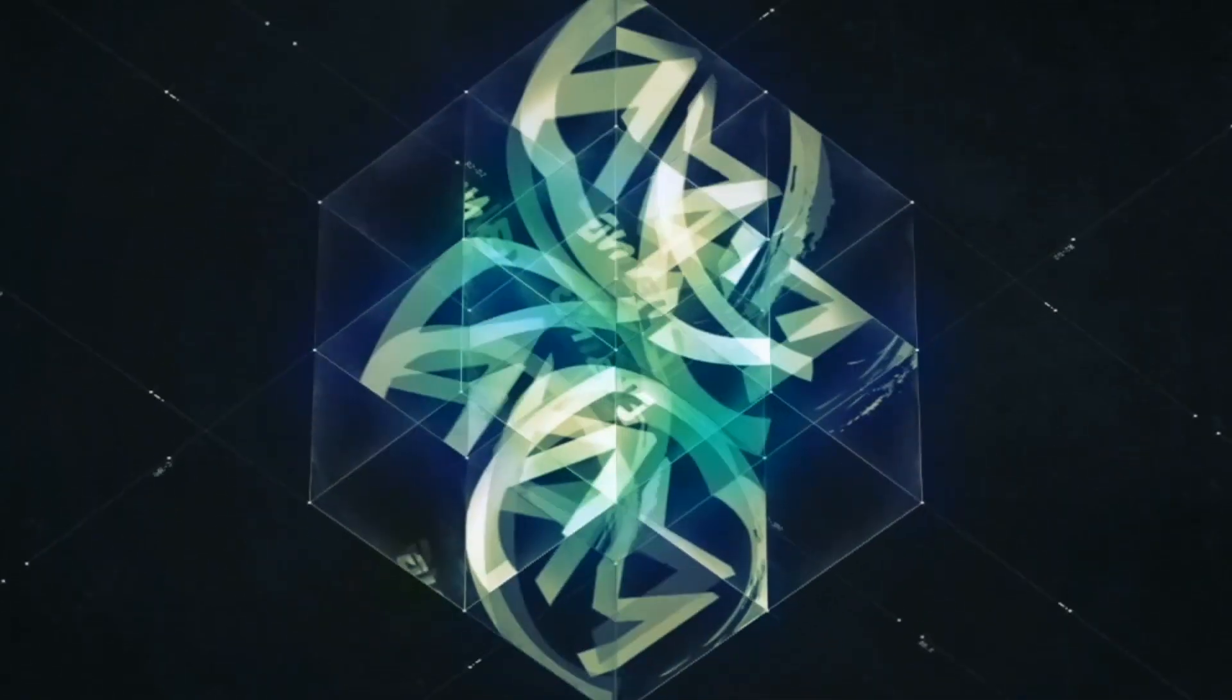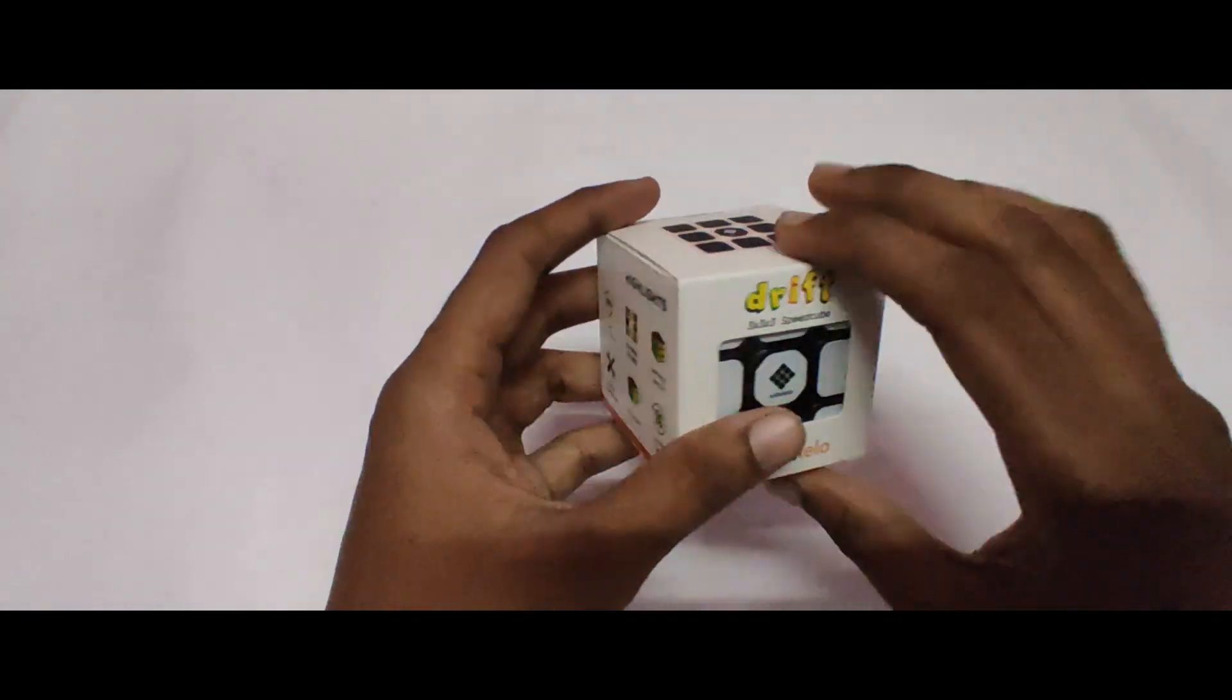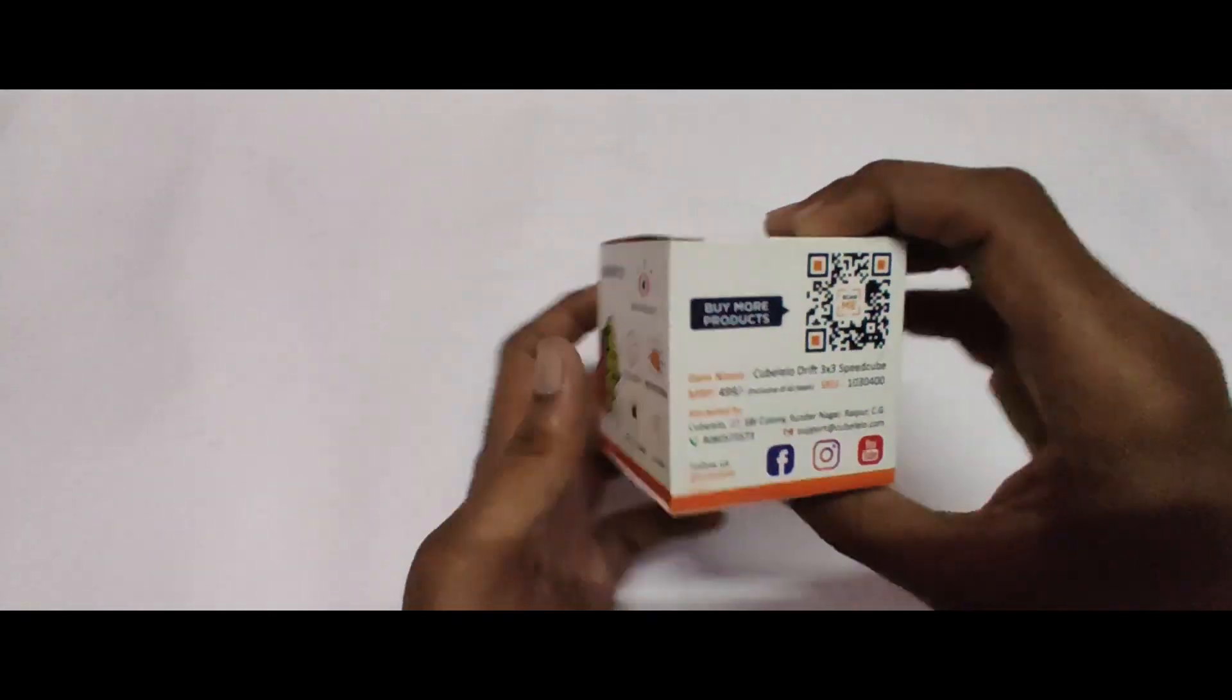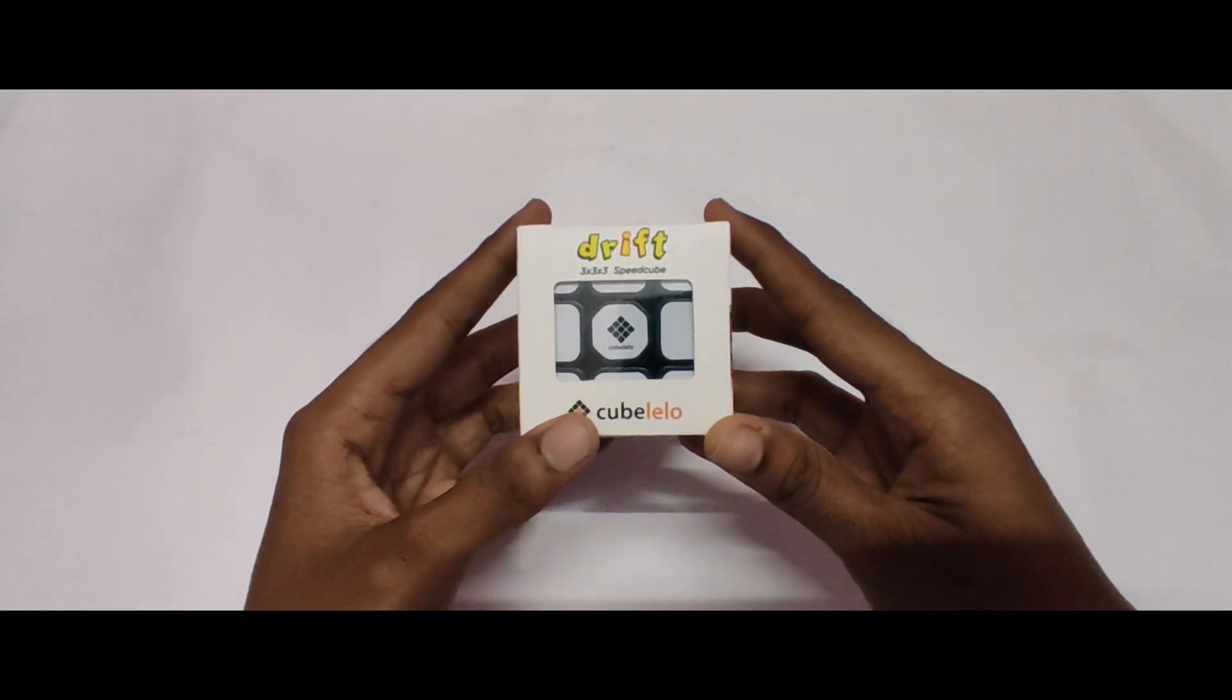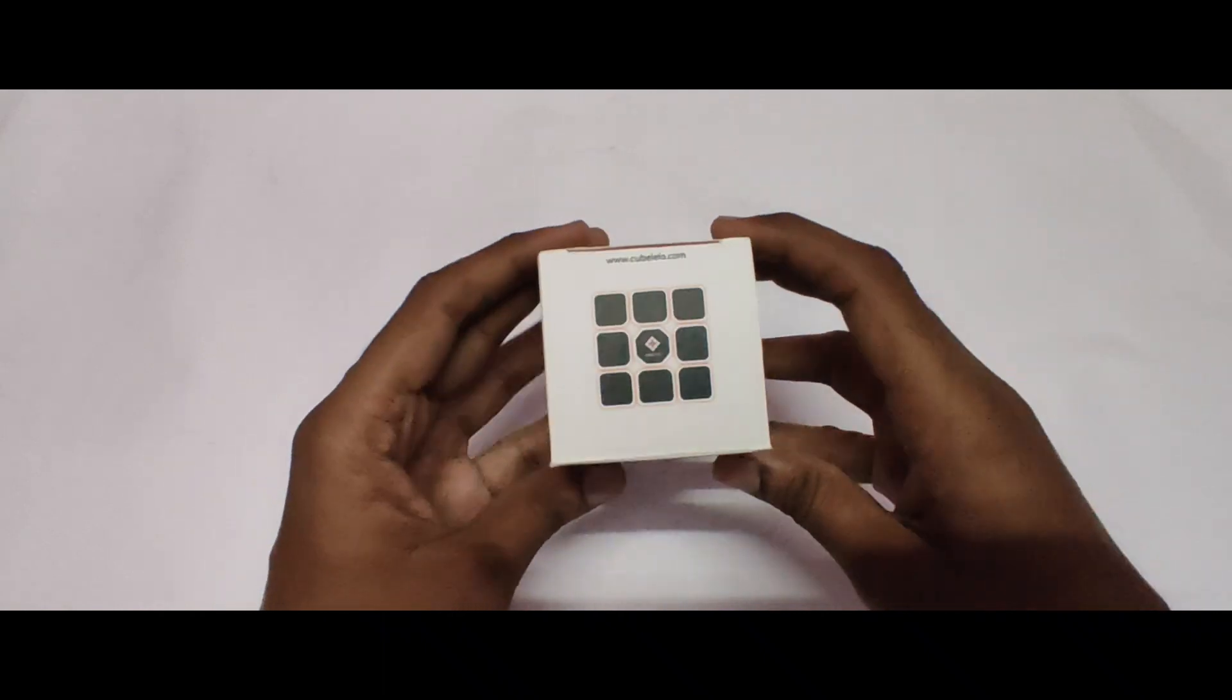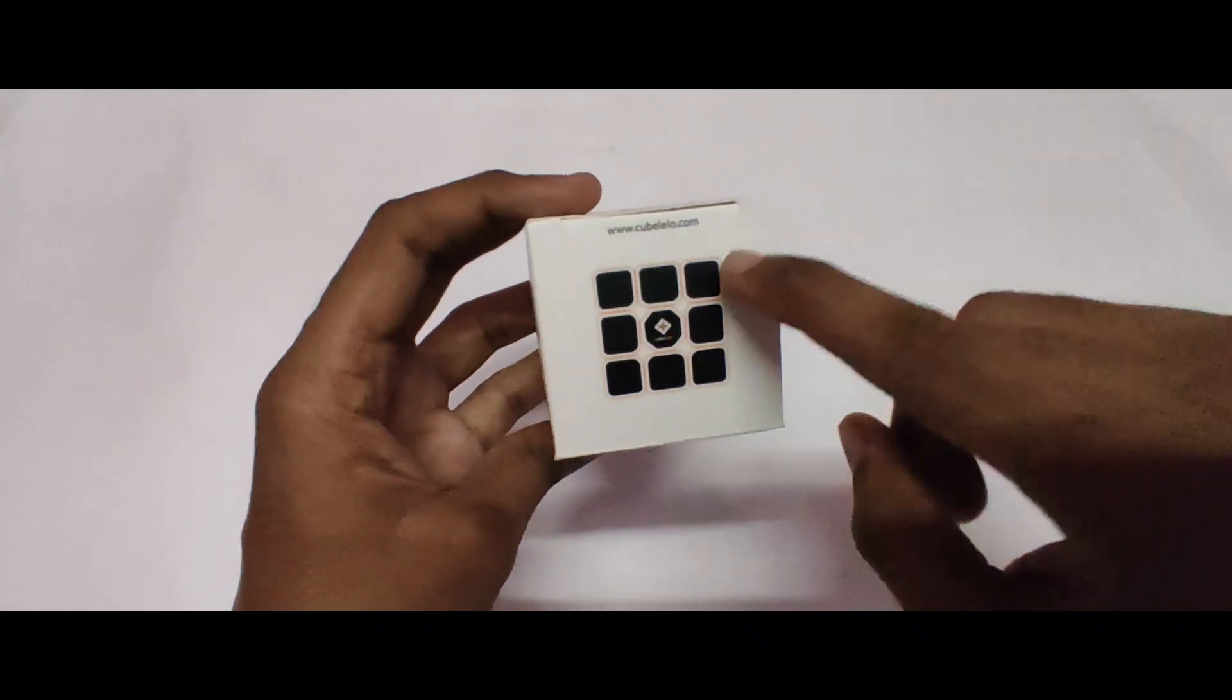Now, this is the package. In this package we have a box. This is the front. Drift 3x3 speed cube by Cube. We have a design, logo and website.